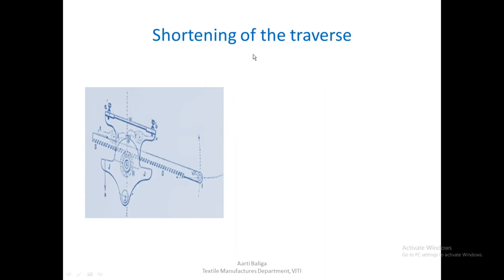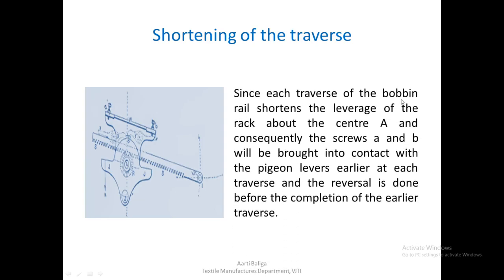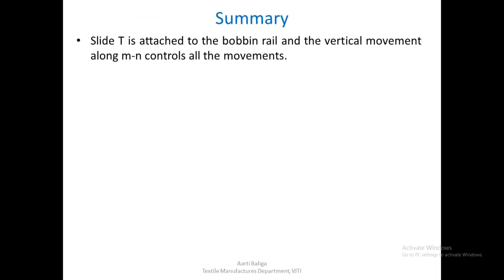This particular movement brings about a shortening of the traverse. Since each traverse of the bobbin rail shortens the leverage of the rack about center A, screws A and B will be brought into contact with the pigeon levers earlier at each traverse. Because of the shortening of this rack leverage, the reversal is done slightly earlier compared to the previous traverse.